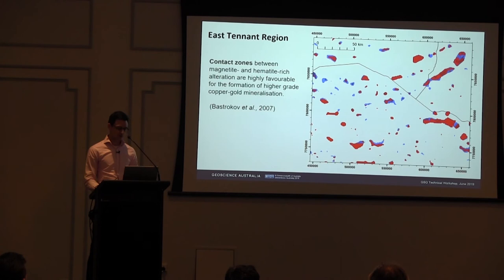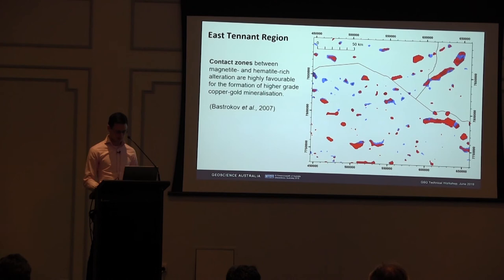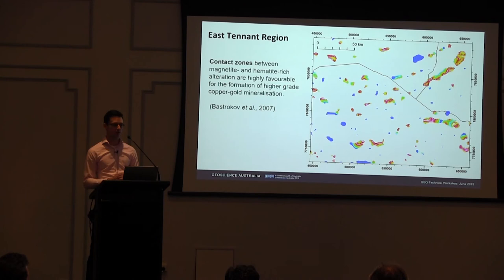As a final thought on the East Tennant region, we're looking at these two zones and their spatial relationship to one another. We identified at the start that contact zones between magnetite and hematite alteration are highly favourable for higher grade copper gold mineralisation. Another way to display this is by their proximity to one another — blue showing bodies in isolation, grading up to hotter colours where they lie directly adjacent to one another. Those hot-coloured areas would be the ones to go and do further research on, to see how well these models hold up.